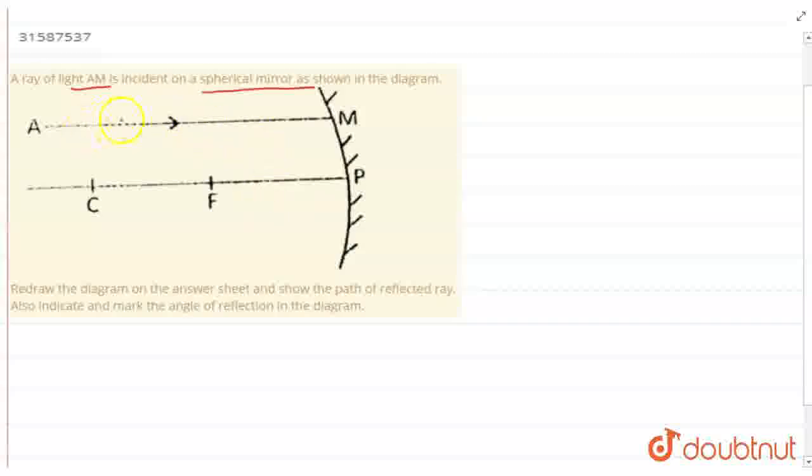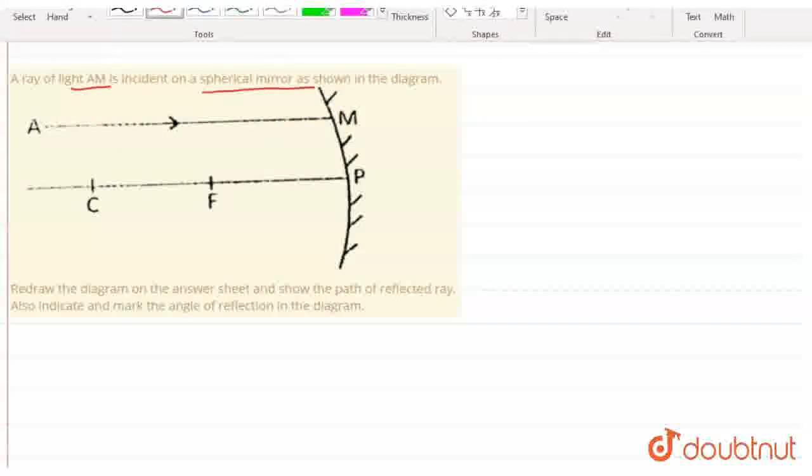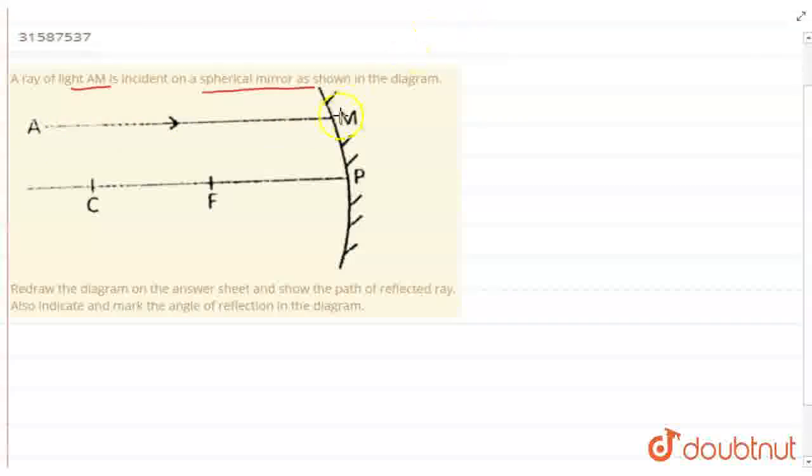In this diagram, we will draw the reflected ray. So AM is my incident ray. Now I have to draw the reflected ray.